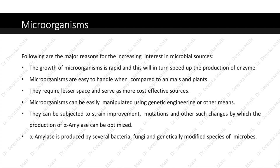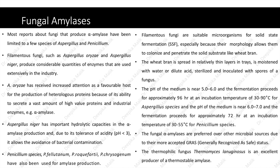Amylases can be obtained from both bacteria and fungi. Most reports about fungi that produce alpha amylase have been limited to a few species of Aspergillus and Penicillium. Filamentous fungi such as Aspergillus oryzae and Aspergillus niger produce considerable quantities of enzymes used extensively in the industry. Aspergillus oryzae has received increased attention as a favorable host for production of heterologous proteins because of its ability to secrete high value proteins and industrial enzymes like alpha amylase. Penicillium species such as Penicillium fellutanum, Penicillium roqueforti and Penicillium chrysogenum have also been used for amylase production.